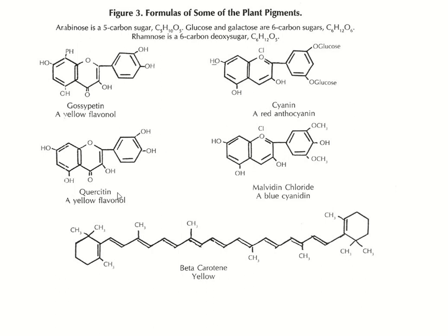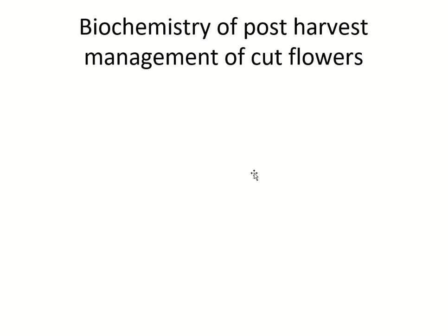Beta-carotene is a yellow flavanol, and malvidin gives red color. Structurally, you will find only an OCH₃ group difference. Red anthocyanins — that is cyanine — requires O-glucose attachment. So the biochemistry of post-harvest management of cut flowers has been completed.